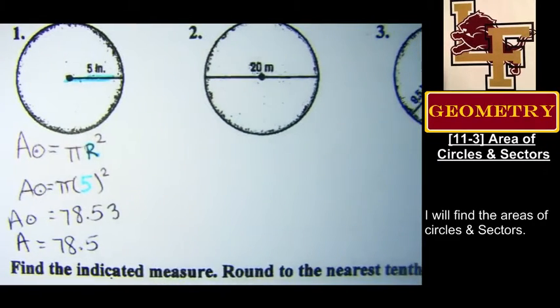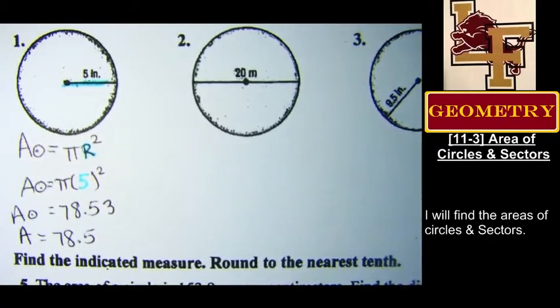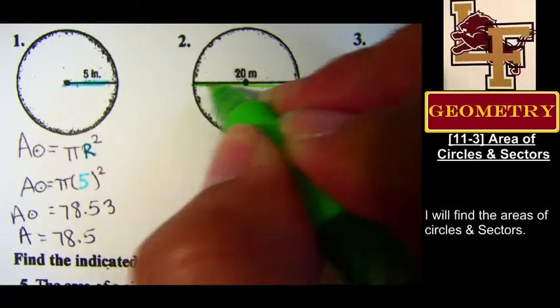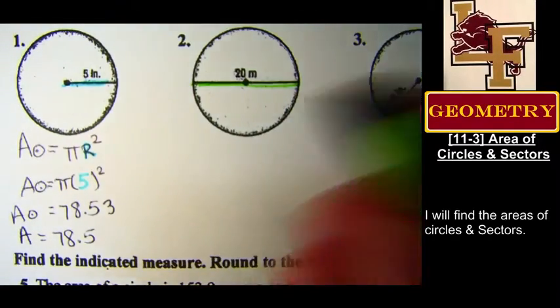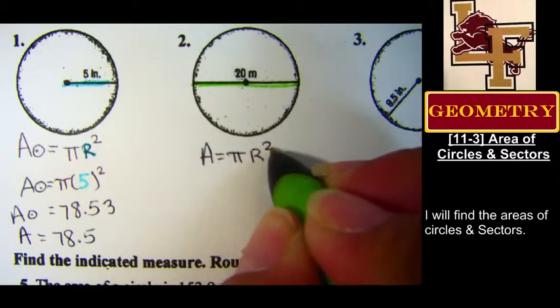Do you want to look at number two? Yeah. All right, what were we given in number two? Diameter. Yeah, we were given diameter. But my formula doesn't run with diameter. What does my formula use again? Radius. Yeah, use radius.